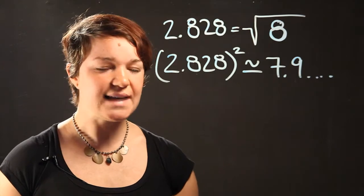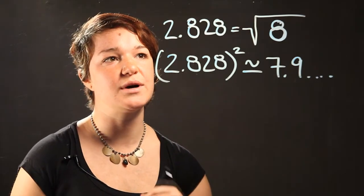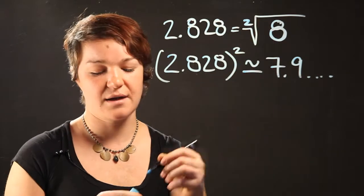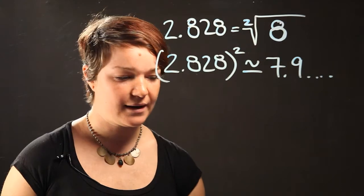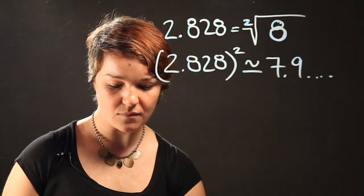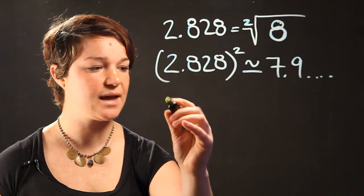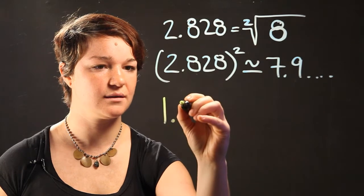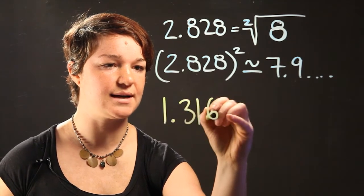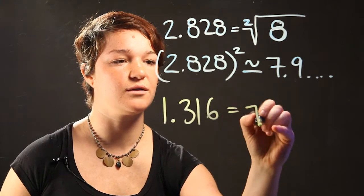So in this case we got lucky because we had a square root. So it was the square root of 8 that was equal to 2.828. Now let's say that we have a higher root, but we don't know what it is. So let's say we're given 1.316 and we're supposed to convert this into a radical.